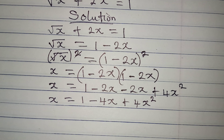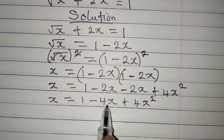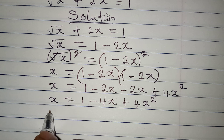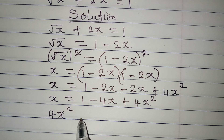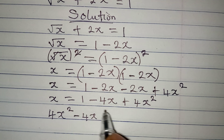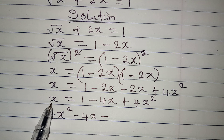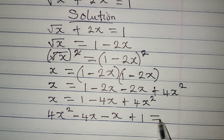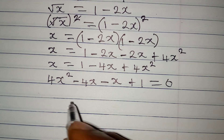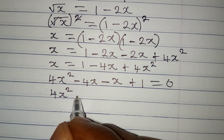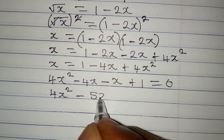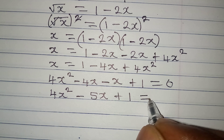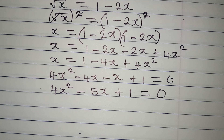Remember we cannot add x and 4x squared because they are not the same thing. We have 4x squared, minus 4x, minus x, plus 1. Bringing x to this side it becomes minus x, so we get 4x squared minus 5x plus 1 equals 0.